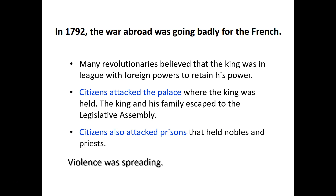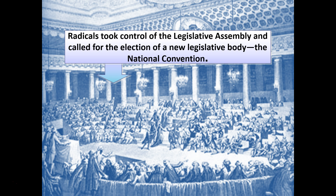Violence is spreading throughout Paris. In the government, radicals — the Jacobins and others — take control of the legislative assembly, and they want to take it one step further. They call for the election of a new legislative body, transitioning from the legislative assembly to the National Convention. And this is where things get a little more crazy.